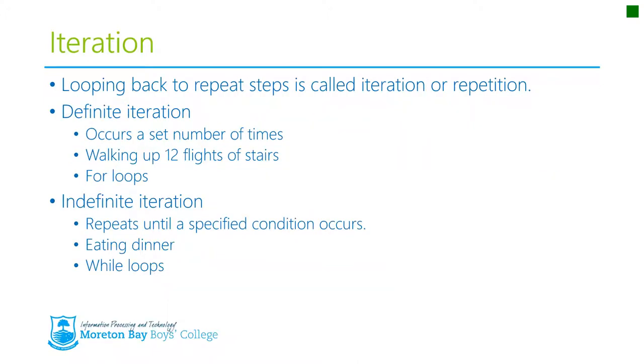Basically, any kind of looping in programming when it loops back to repeat steps is called iteration or repetition. In programming we have two different types of iteration: definite iteration and indefinite iteration. It all comes down to the idea of how many times you are looping.